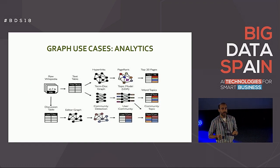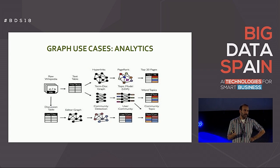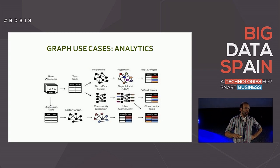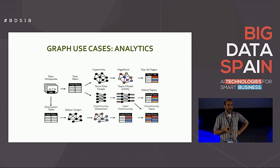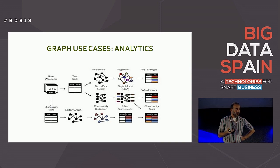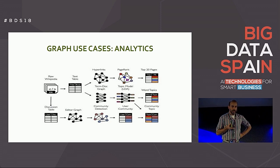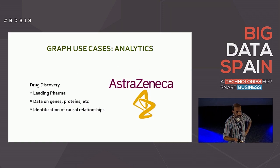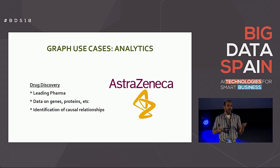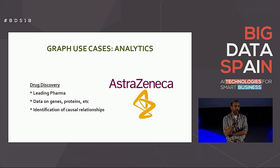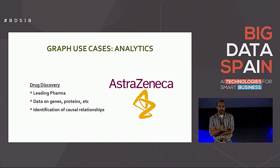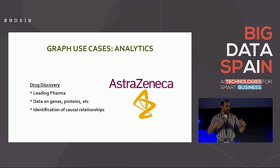You're probably familiar with PageRank, the most famous graph algorithm. There are lots of algorithms — centrality and others — that operate on graphs, helping you discover structure and make connections in your data. A graph database is much better suited for this than a relational database. AstraZeneca, one of the leading pharma companies, has lots of data on genes and proteins, and to find causal relationships between those, they use a graph database.